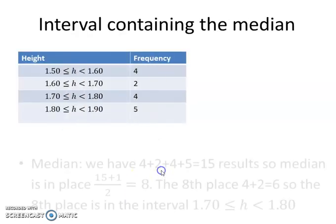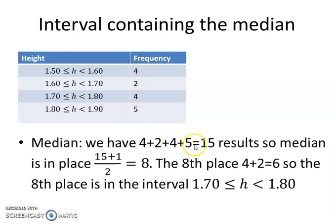Then what about the median? Again, the median, we have 15 results. So if we do the quick rule, 15 plus 1 divided by 2, we get 8. So this means that the 8th place is the one that contains the median. Look, if you have 4 plus 2 is equal to 6. So this is place 1 to 4, this is place 5 and place 6, and this is place 7, place 8, place 9, and place 10. So here is place 8, that is the one that we are looking for. So this is the interval that contains the median, because we have 4 plus 2 is 6, and we are looking for place 8. So the interval that contains the median is the interval between 170 and 180.